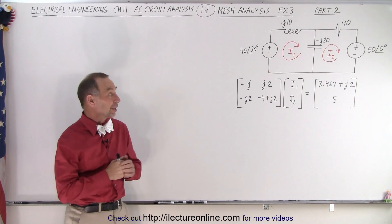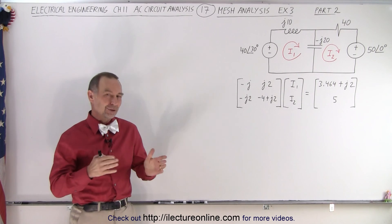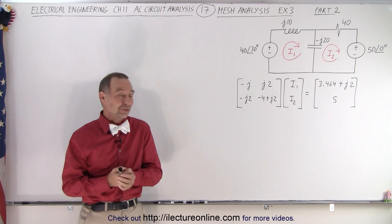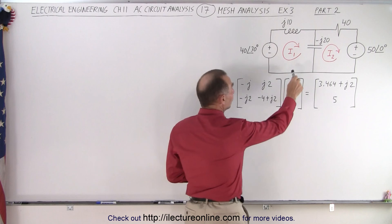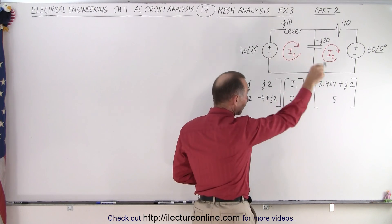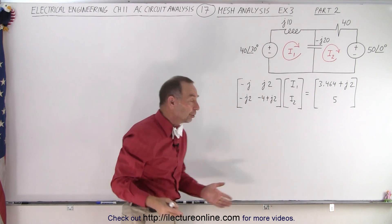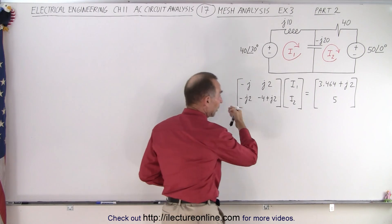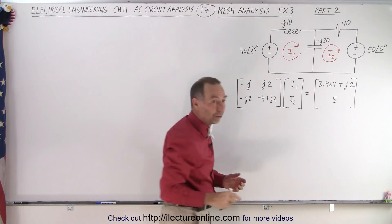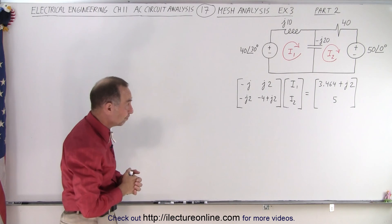Welcome to our lecture online. So here we have the same circuit as before because now we're going to do part two. The first part on the previous video, we set up the two equations using the KVL method by going around each of the meshes and adding all the voltages. And then we set up the equations in matrix format like this so we can use the method of determinants to solve for the two currents I1 and I2.